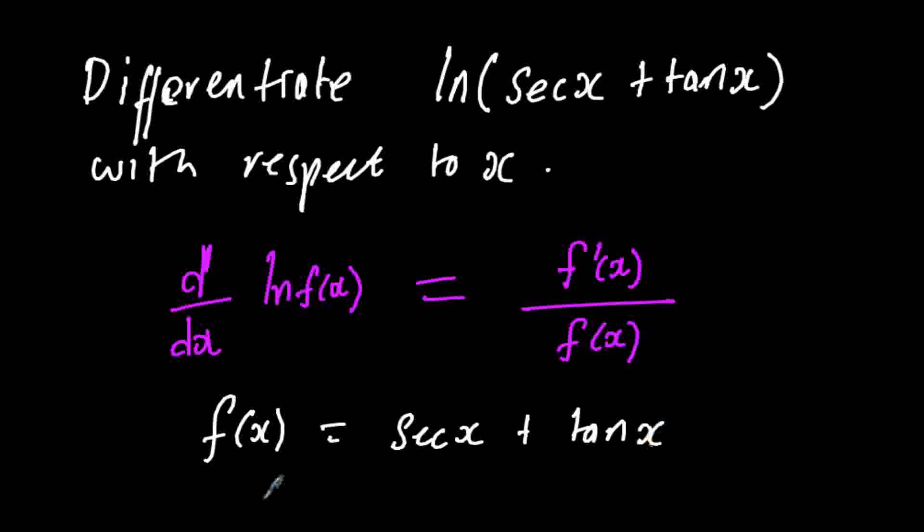So differentiating this, it will give us sec x tan x, that is the derivative of sec, and then plus the derivative of tan which is sec squared x.